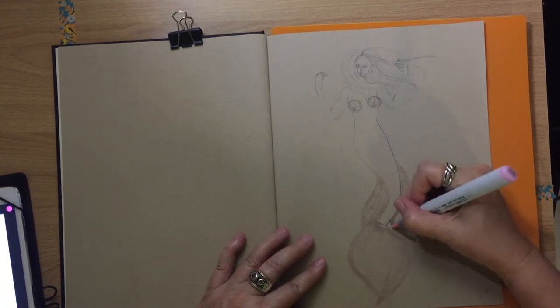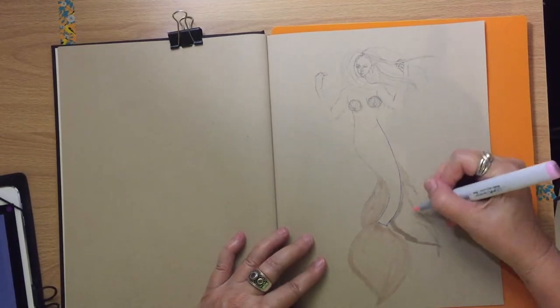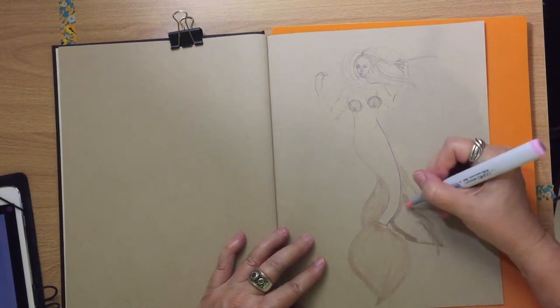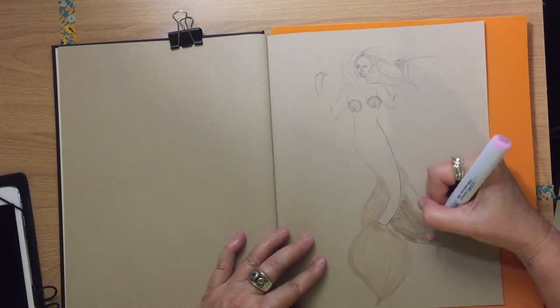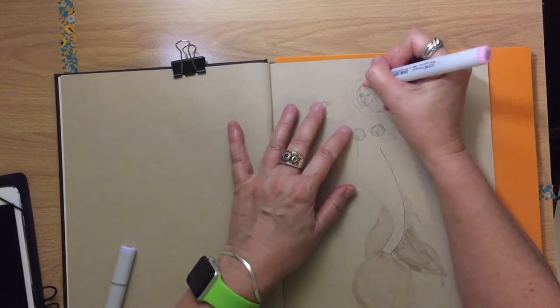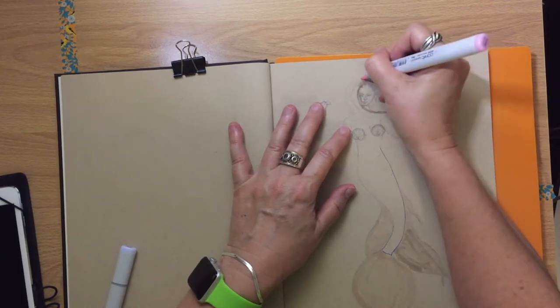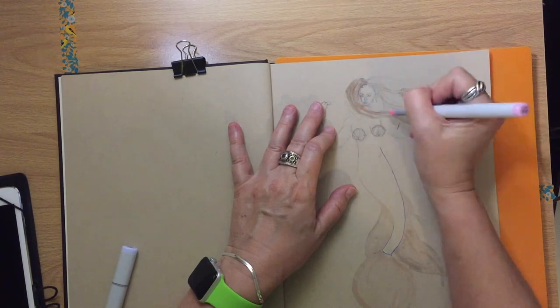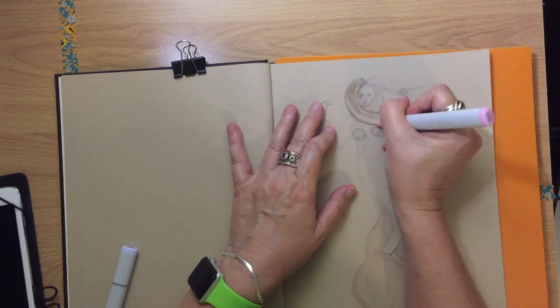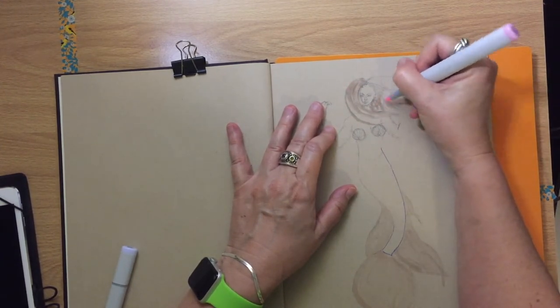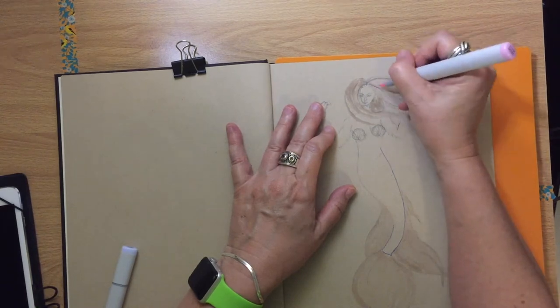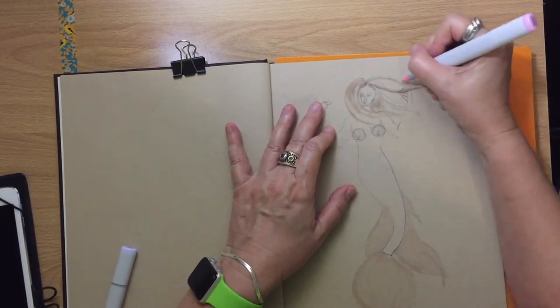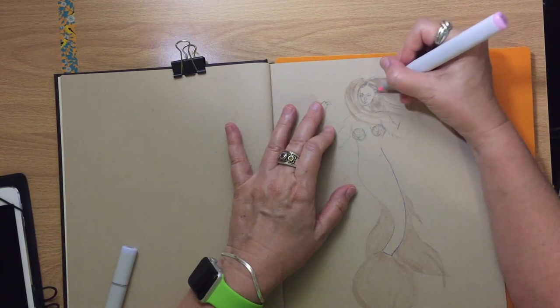So what she suggested doing, and I am working on a Strathmore toned paper sketchbook here, what Safira Lou suggested doing was using Copic markers or just alcohol markers in general to lay down a base coat on the toned paper for your colored pencils to go over. So that's what I'm doing right here. The basic colors of this mermaid, if you can tell, are pink and blue.